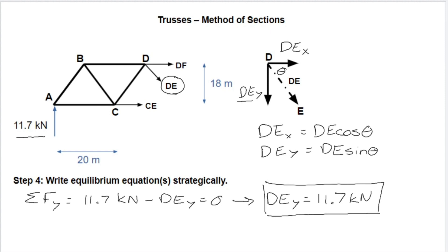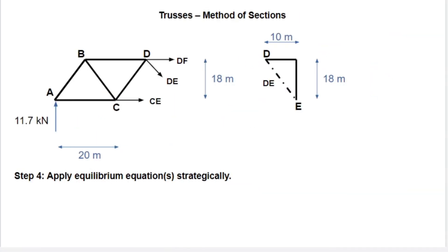So now we need to use this relationship here to kind of trace back to what DE is, now that we know what DEY is. So to do that, we really need to consider the trigonometry here. So on the right, what I've done is just broken down geometrically what this looks like. So if we follow the path of DE here, it goes between points D and E. The width is half the distance where D lands between C and E. So it's 10. The height is 18.